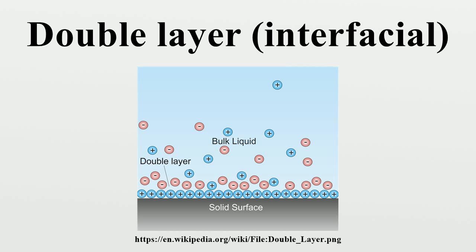It is thus called the diffuse layer. Interfacial DLs are most apparent in systems with a large surface area to volume ratio, such as a colloid or porous bodies with particles or pores on the scale of micrometers to nanometers.